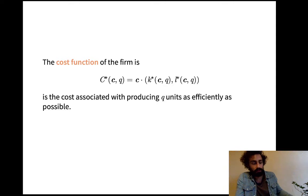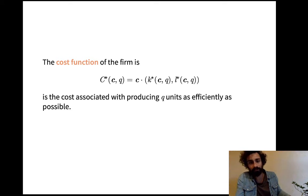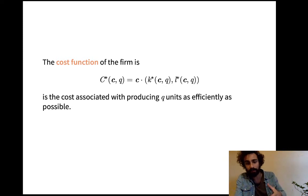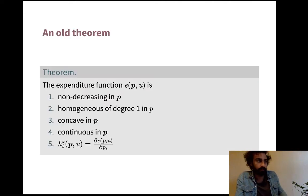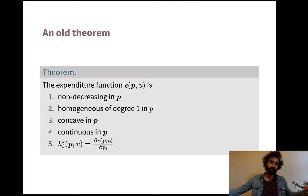The cost function is the same as our expenditure function: the expenditure function e took a price vector and a utility target; the cost function takes a cost vector and a production target, but otherwise it's exactly the same. The cost function is defined as the vector of costs times the conditional factor demand — the cost of capital times the units of capital, plus the cost of labor per unit times the amount of labor hired — optimized when choosing capital and labor to meet level q.